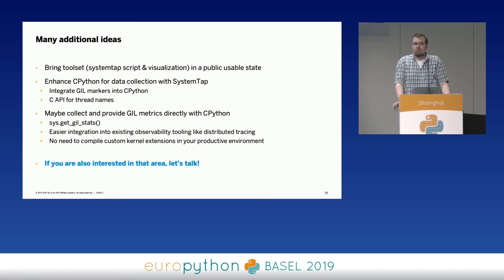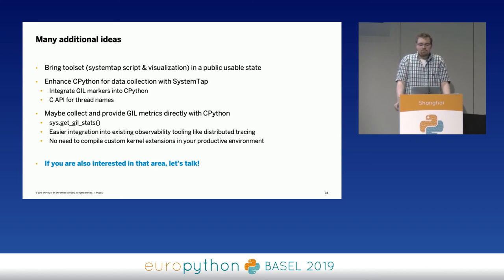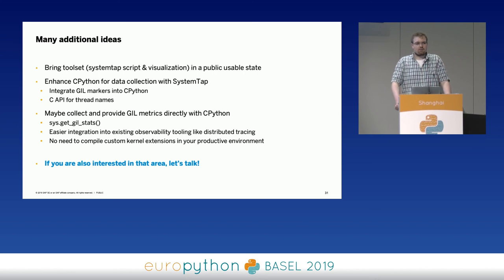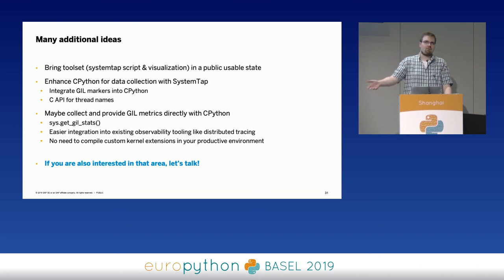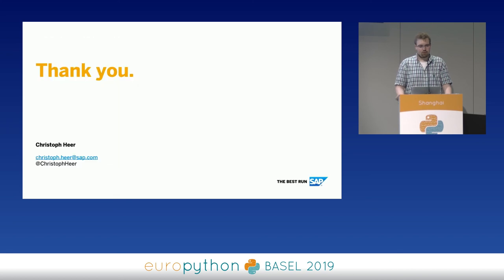We have the GIL and will probably never remove it from CPython because it is not easy — otherwise people would already have done it. But if we learn to live with the GIL, we can also improve overall Python application performance and don't have to rewrite everything in C++, C, or Assembler. Thank you very much — we have five minutes, so I think we can do one or two questions.